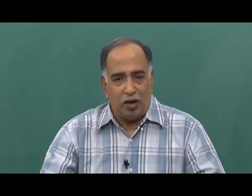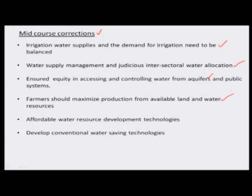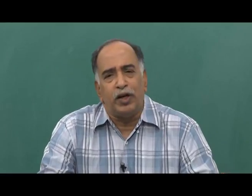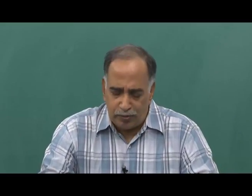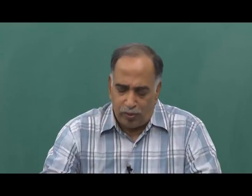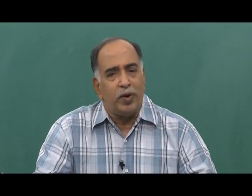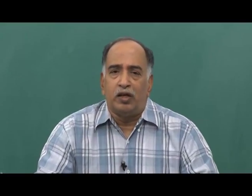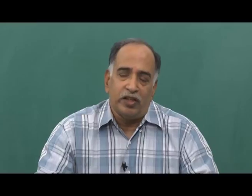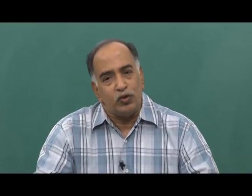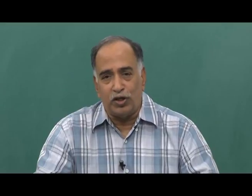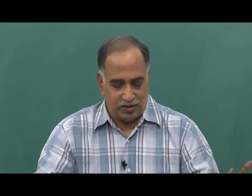Otherwise groundwater will be completely depleted. We also need to think about short-period, high-yielding variety crops. We have to grow food based only on available land and water — maximizing yield from the same area. Additionally, in and around urban areas, local agricultural lands are being converted into settlements, which means we are losing potential agricultural area from our system.